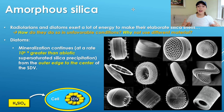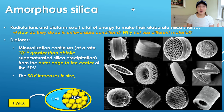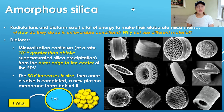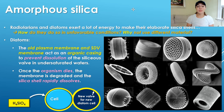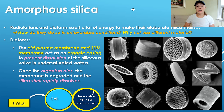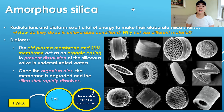This mineralization process occurs from the outer edge to the center of the SDV. The SDV then increases in size until the valve is completed, and then a new plasma membrane forms behind it. The old plasma membrane and SDV membrane act as an organic casing that prevents dissolution of the siliceous valve in undersaturated waters — because marine conditions are not supersaturated with silica, so if the valve were released into the environment unprotected, it would likely dissolve. Once the organism dies and the membrane is degraded, the silica shell rapidly dissolves in most cases and is recycled back into the water column, then quickly re-precipitated by other organisms using it for shell formation.